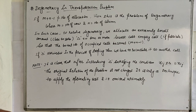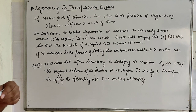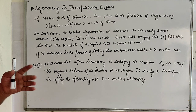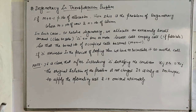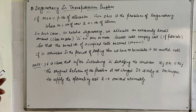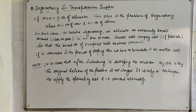Hello guys. This is another lecture on the transportation problem. In the previous 6 lectures, you have studied all the basic things of the transportation problem — how to find BFS (basic feasible solution). You have studied 3 methods to find BFS: first is the North-West Corner method, second is the Least Cost method, and third is the Vogel Approximation method. And to find the optimality, you have already studied the MODI method.